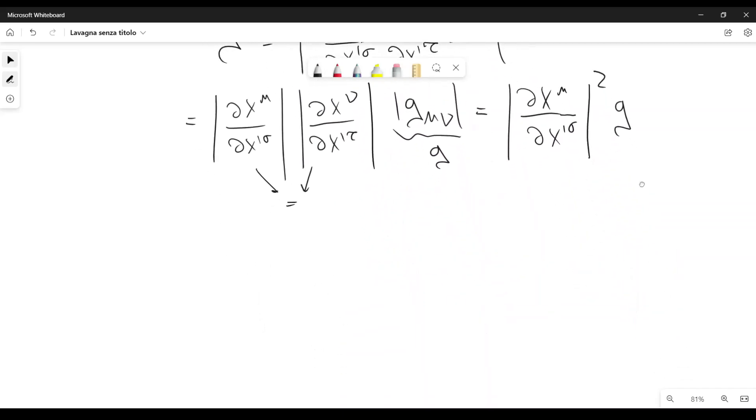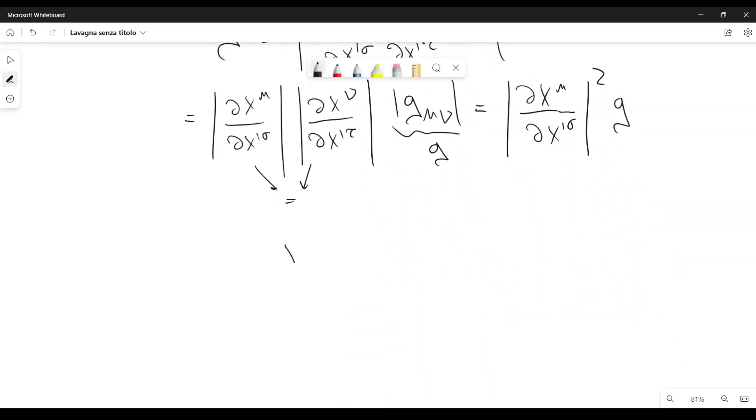And from here, we see that the square root of G prime is equal to the determinant of D X mu with respect to X prime sigma times the square root of G.